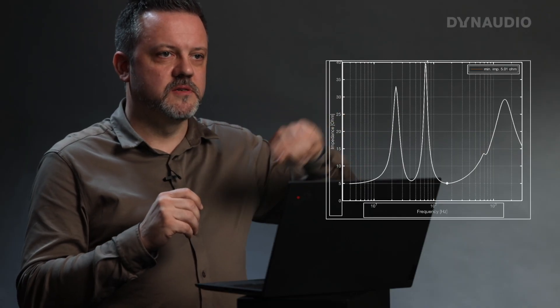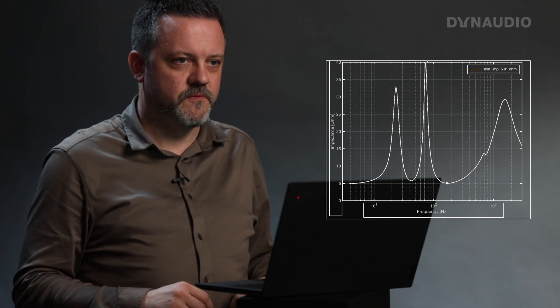You need to understand that the impedance varies with frequency. Whenever you see a specification sheet, you always see one number, but the actual impedance varies with frequency. If you look at a curve of impedance, you'll see it go up and down depending on frequency. The load on the amplifier — how hard we are driving the amplifier — depends on the minimum impedance. Some people think it depends on the average impedance, but it's actually the minimum impedance that matters.